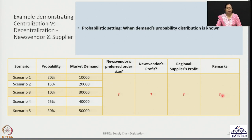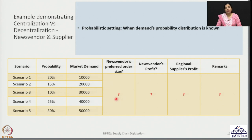We had seen in the deterministic setting that in some scenarios both players were profitable and in others only one was. To judge what the preferred order size is here, we look at a specific decision-making profile. The news vendor is a rational entity looking to maximize profit. The decision will relate to the order size which maximizes profit. But since scenarios are not deterministic, there is only a probability associated with each — so how do you determine profit in such cases?